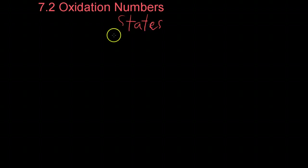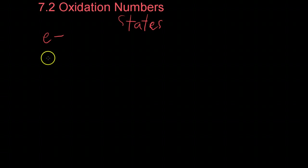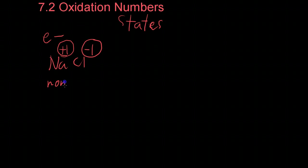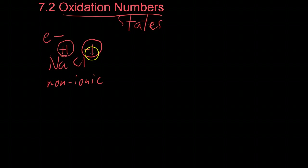Oxidation numbers are numbers assigned to atoms within compounds to clarify electron location within the compound. They're very similar to the charges on different ions in an ionic compound. For example, if we have NaCl, which has a +1 charge and a -1 charge on the cation sodium and anion chlorine, these ionic charges are analogous to oxidation numbers which occur in non-ionic compounds. These oxidation numbers are not an inherent chemical property like charges on ions — they're sort of rounded numbers. However, they help for figuring out how different atoms bond within compounds and solving various chemical formulas and reactions.